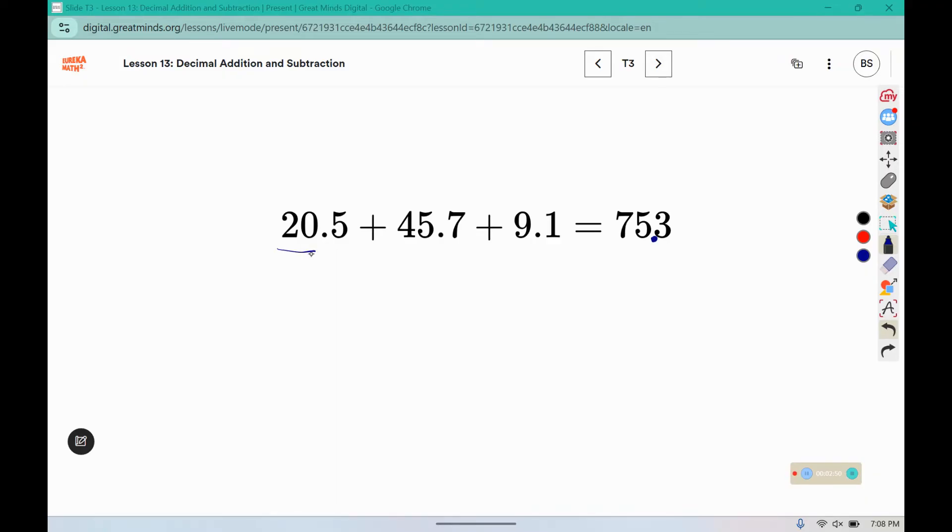We have 20 plus 45 plus 9. That's about 20, 40, and 10. That would get us to about 70. So it should be 75.3. We wouldn't want our answer to say 7.53 because that would be too small, and 753 was too large. So we needed to adjust the place values to match the sum.